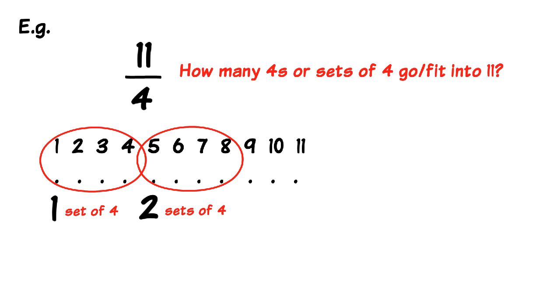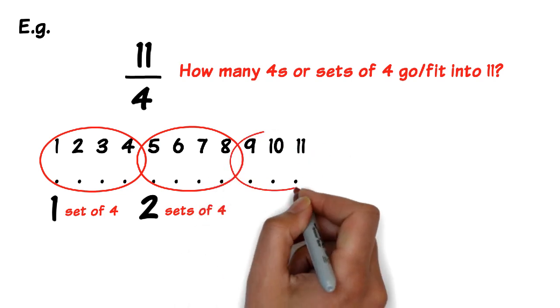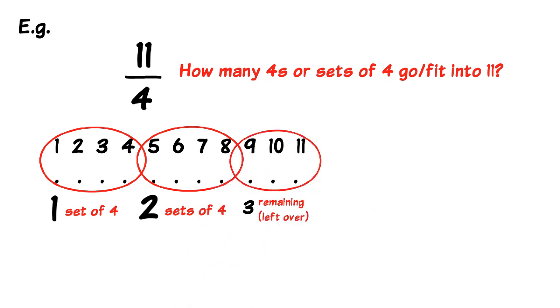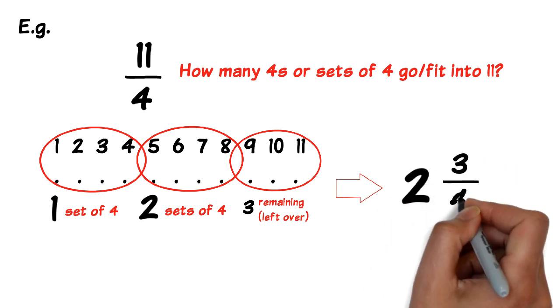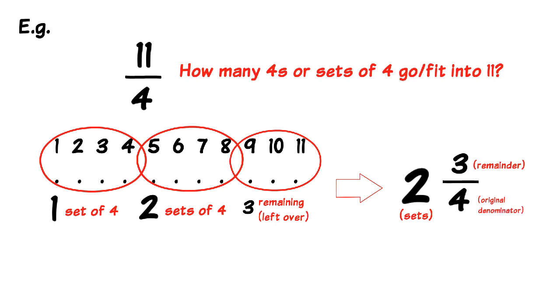And since 2 sets of 4 is 8, that means to get to 11, we have a remainder of 3 left over. And that 3 is still being divided by 4, because that's incomplete. So we have 2 and 3 quarters, and we have successfully converted from an improper to a mixed number fraction.